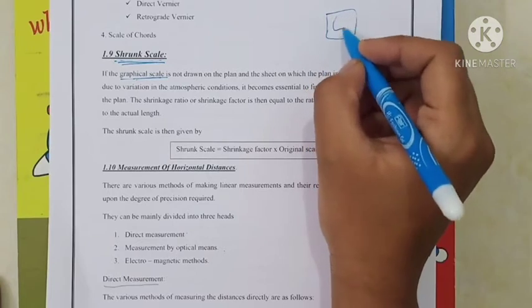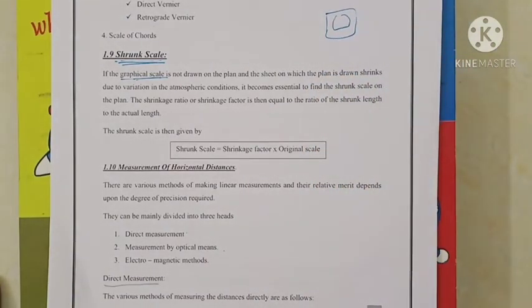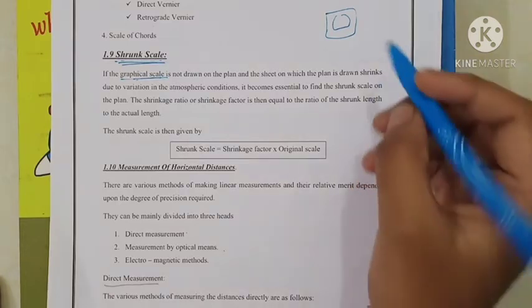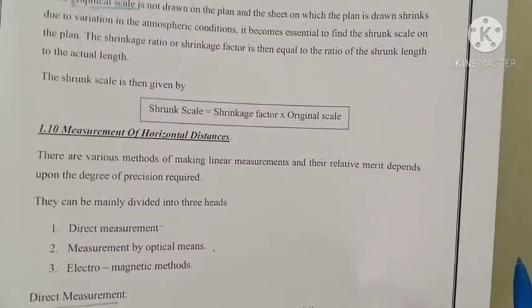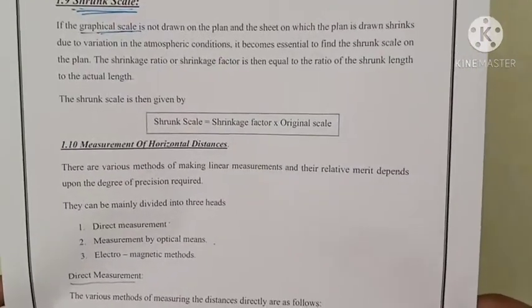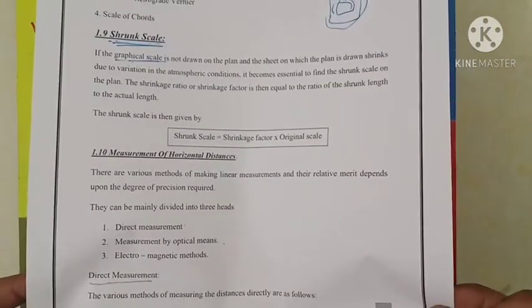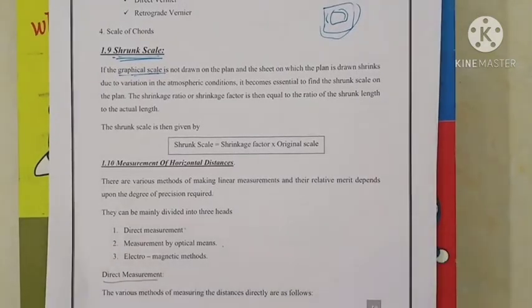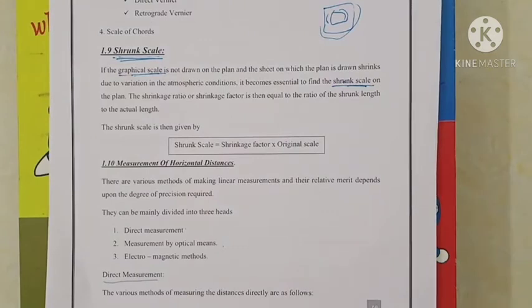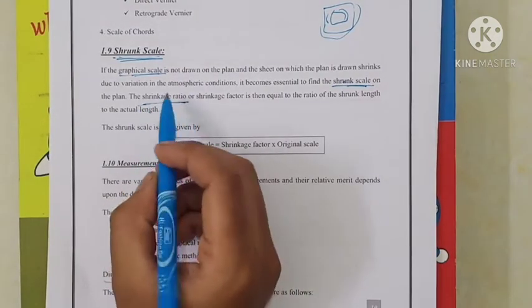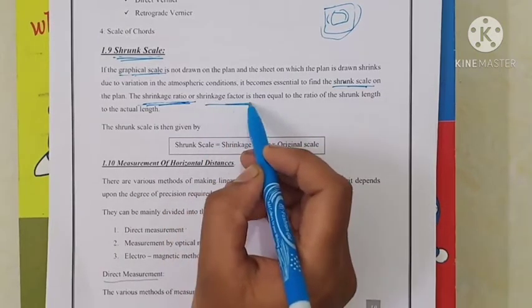The sheet will shrink due to variation in atmospheric conditions. Because of variation in atmospheric conditions, the sheet will shrink. So it is essential to find the shrunk value of that plan. This concept is called the shrinkage ratio or shrinkage factor.